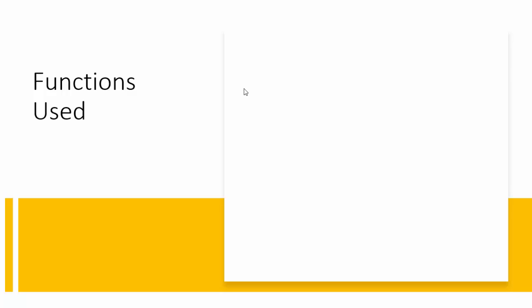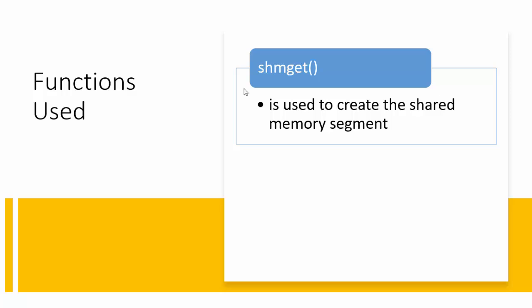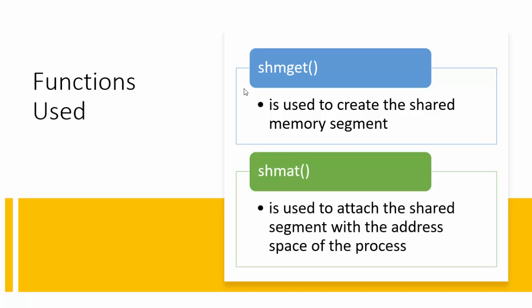For writing the programs for shared memory, we need to use two very important functions. The first one is shmget — shared memory get — this function is used to create the shared memory segment. The second function is shmat — shared memory attach — this function is used to attach the shared segment to the address space of the process. Until we attach the shared segment to the address space of the process, we cannot use that shared segment.